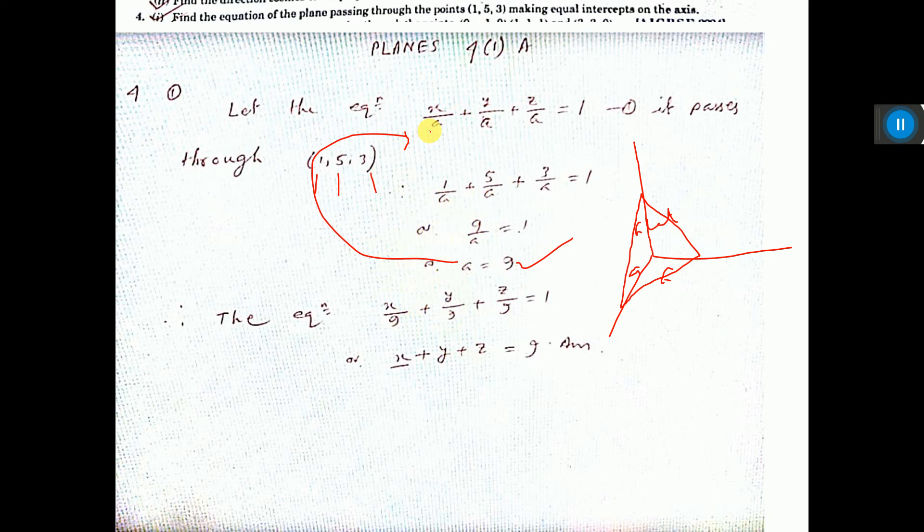a is equal to 9. See here I got this equation. Now multiply both sides by 9, then you will get x + y + z = 9. That is the equation of the plane.